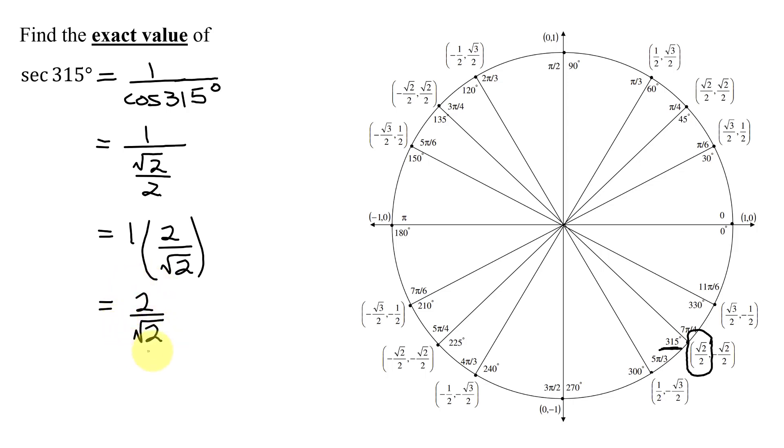But I cannot leave this as my answer. I need to simplify it. So I'm going to rationalize the denominator. So I'm going to multiply numerator and denominator by the square root of 2.